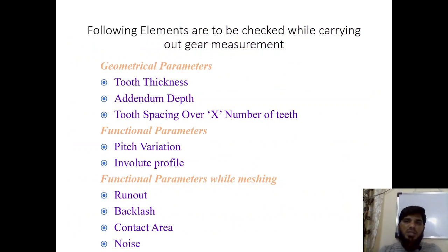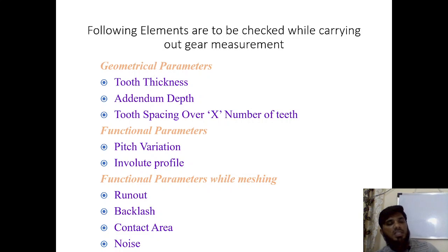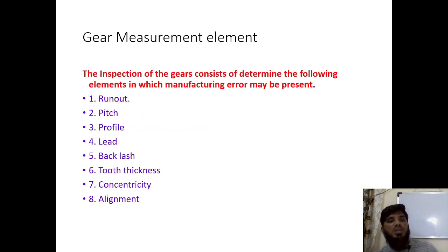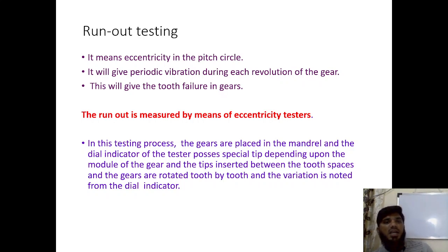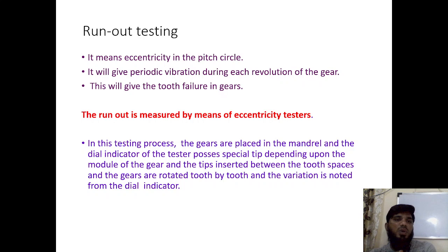The following elements are checked during gear measurement: tooth thickness, addendum depth, number of teeth, pitch variation, involute profile, types of runout, backlash, contact area, noise, pitch, profile, lead, backlash, tooth thickness, concentricity, and alignment. Alignment refers to how well the gears seat relative to one another. Runout testing measures eccentricity in the pitch circle; eccentricity causes periodic vibration during each revolution because the gear does not rotate evenly, creating vibrations in the whole machine.